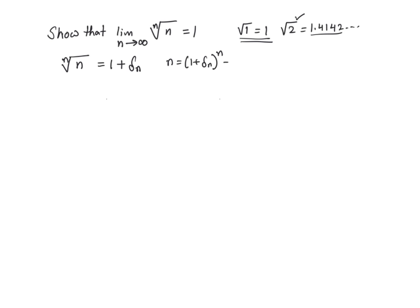Now, if I use the binomial theorem, I'm going to get the following: 1 plus nc1 delta sub n plus nc2 delta sub n square plus dot dot dot plus ncn delta sub n to the power n. By the way, ncr...